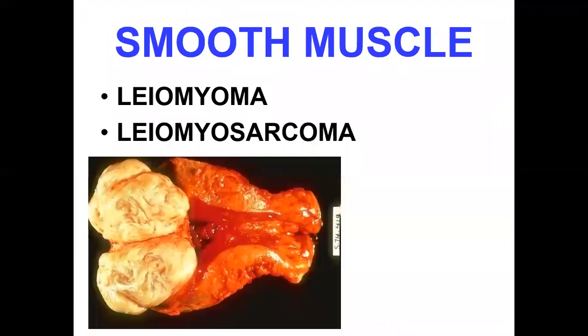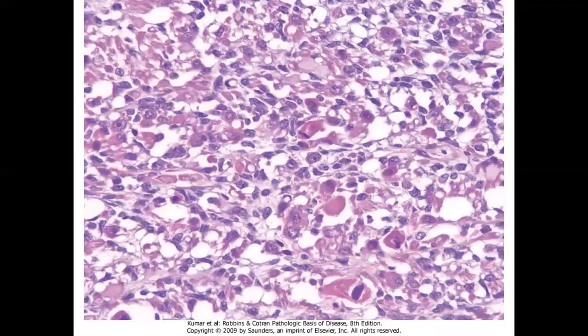In embryonal rhabdomyosarcoma, you will see small round cells — sheets of small round cells like lymphoma cells — and these are rhabdomyoblasts. The sites of embryonal rhabdomyosarcoma include the head and neck region and the genitourinary system. In the urinary bladder, they are often seen beneath the mucosa, where these cells form a cambium layer of immature small round cells.